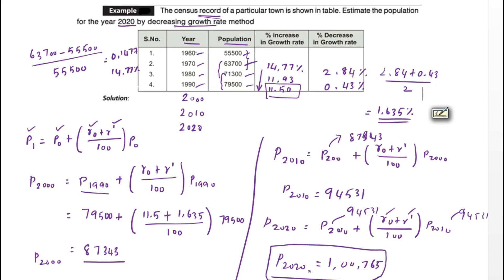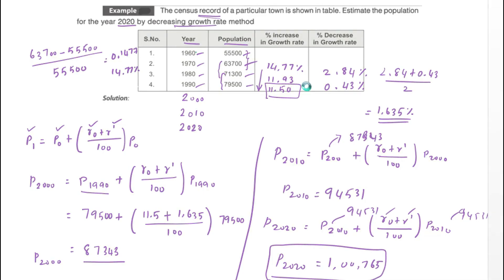So this is how we solve a problem using the decreasing growth rate method. We mainly use this method whenever the percentage increase in population shows a downward trend. We will see the next topic in the next video — thank you.